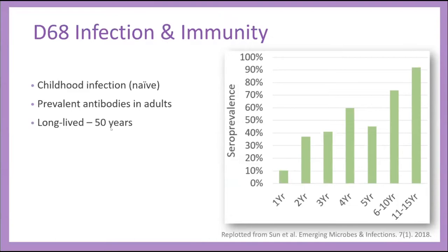We can also see that antibodies are pretty long-lived. There was a great study that looked at antibody titers in adults of about 50 years old in 2012, and they had really strong antibody titers against the Fermon strain — the first D68 that was identified. This does seem to indicate that the titers we form in childhood are pretty long-lived through our lives and remain fairly effective, at least when tested against what we first encountered as a child. So we have a virus that's primarily infecting children, with adults having some level of protection.